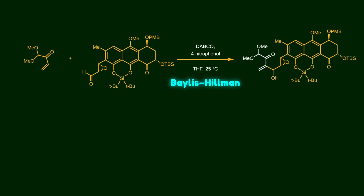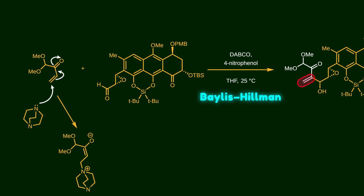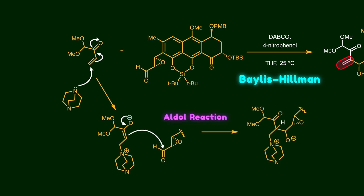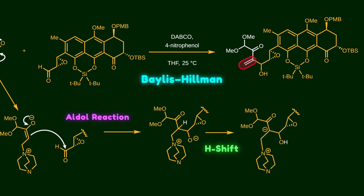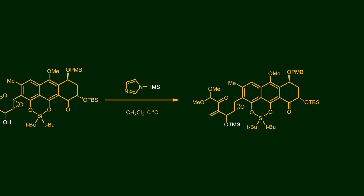The next step is the Baylis-Hillman reaction. Here we aim to couple this conjugated compound with the aldehyde to introduce the exo-double bond. First, DABCO attacks the Michael acceptor via a 1,4-addition. The resulting enolate then attacks the aldehyde — essentially an aldol reaction. This intermediate undergoes a proton shift and the negative charge regenerates the DABCO. The newly formed alcohol is then protected with TMS. Notice that this intermediate exists as a mixture of 3:2:1 epimers at that carbon atom, and we continue the rest of the synthesis without separating them.